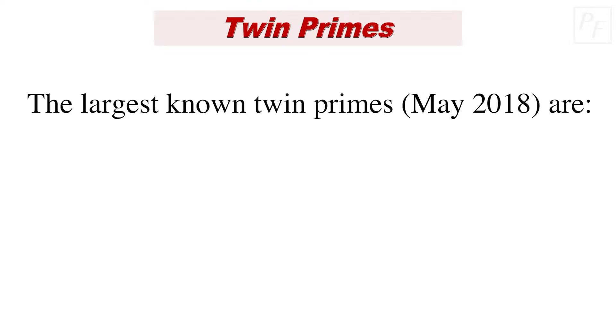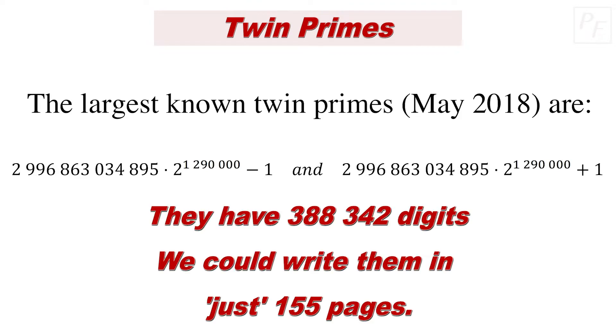The largest known twin primes, until May 2018, are... These numbers, which were discovered in September 2016, are much smaller than the largest known prime, because they only have 388,342 digits, which means that we could write them in just 155 pages of a dense book.